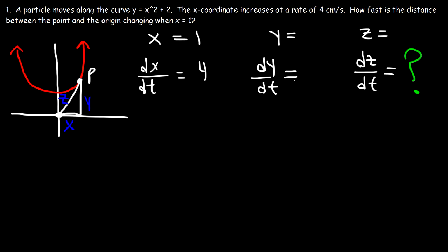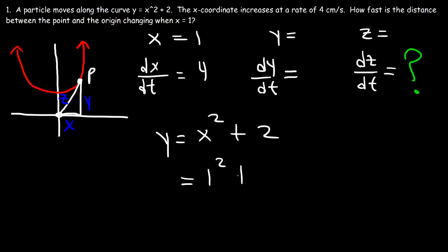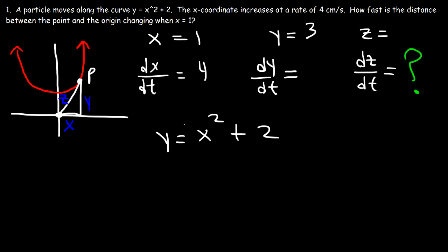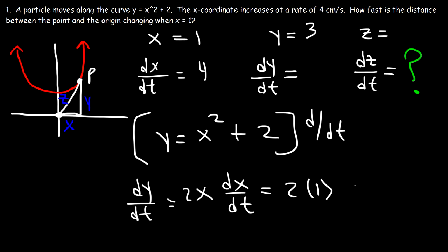So how can we calculate dz/dt? Let's find the missing pieces first. We can calculate y using the equation y equals x squared plus 2, replacing x with 1: 1 squared is 1, and 1 plus 2 is 3, so y equals 3. Using that same equation, we can calculate dy/dt by differentiating with respect to time. The derivative of y is dy/dt, the derivative of x squared is 2x times dx/dt, and 2 is a constant so its derivative is 0. With x equal to 1 and dx/dt equal to 4, we get dy/dt equals 2 times 1 times 4, which is 8.